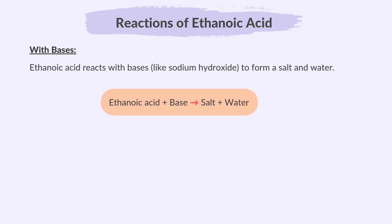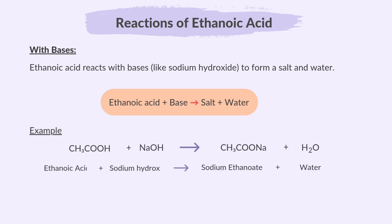Ethanoic acid reacts with bases like sodium hydroxide to form a salt and water. For example, ethanoic acid and sodium hydroxide gives sodium ethanoate and water. So the salt produced is sodium ethanoate.